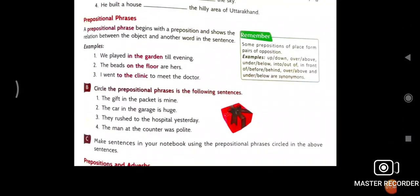And after that, prepositional phrase. What is prepositional phrase? Here written, a prepositional phrase begins with a preposition and shows the relation between the object and the other word in the sentence. What are the prepositional phrase? Here remember, in remembering written, pair of prepositions like up, down, over, above, under, below. So we played, examples are, we played in the garden till evening. The beads on the floor are here.